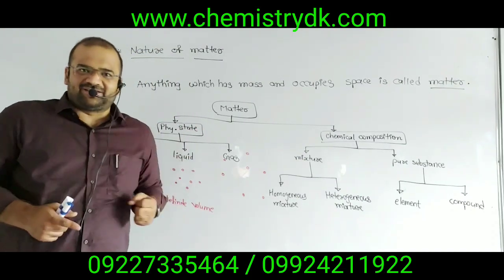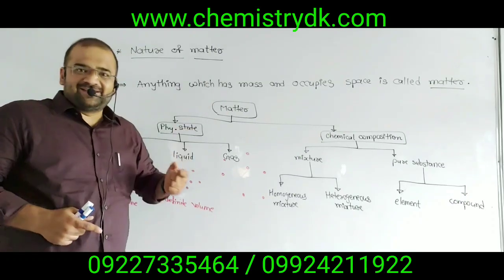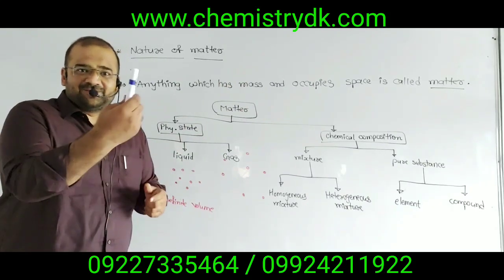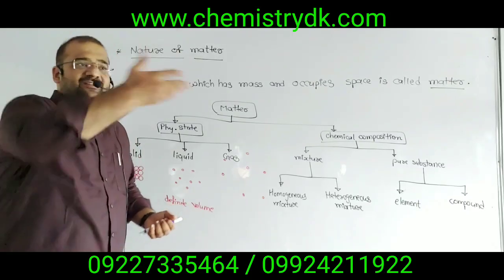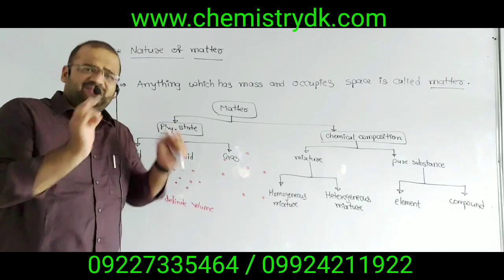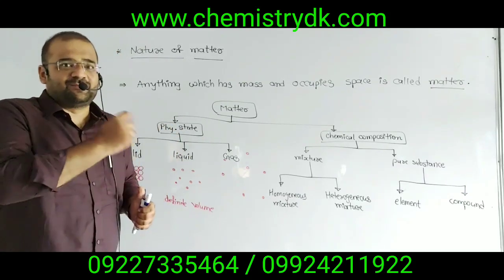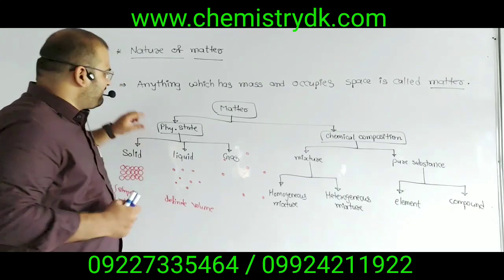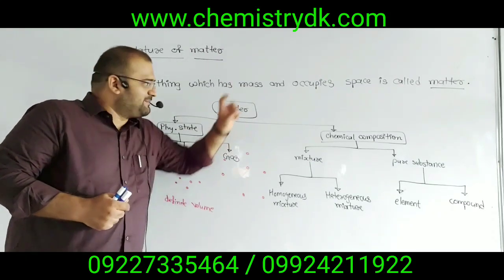How can you define matter? Anything around us which has mass and occupies some space or volume is called matter. Anything around us which can be seen or not seen, but which occupies space and has some mass, is called matter. Matter can be classified in two ways: one is by physical state, and another is by chemical composition.